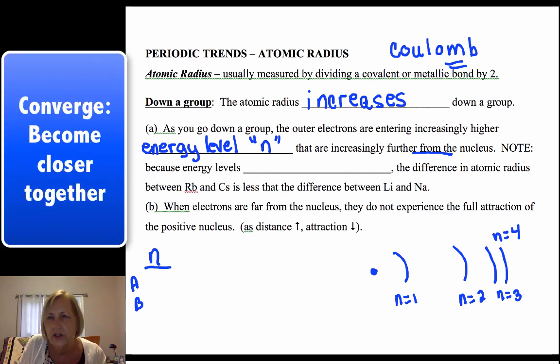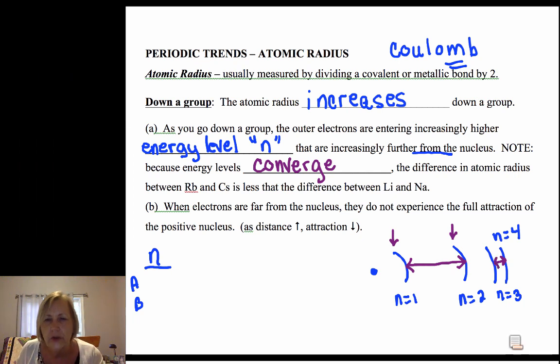Now another thing I want you to notice—do you notice that my energy levels converge? To converge means to get closer and closer together. If I have an element in n=1 and I'm comparing it to n=2, their size difference will be greater than if I was comparing two elements further out, say between n=3 and n=4.